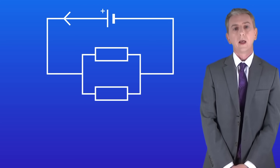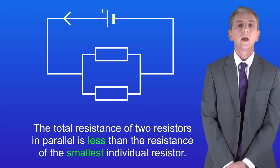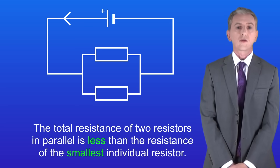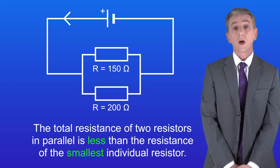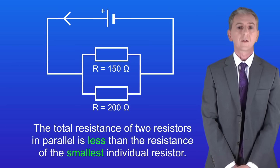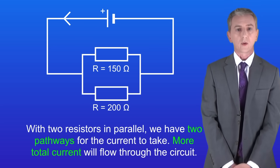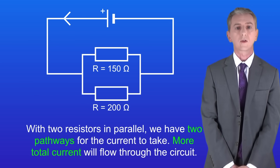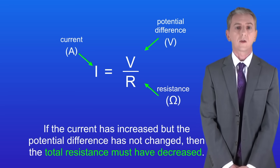We're going to finish now by looking at resistors in parallel. This is more complicated than resistors in series, but the good news is that you're not expected to calculate the total value for resistors in parallel. The key fact to know is that the total resistance of two resistors in parallel is less than the resistance of the smallest individual resistor. For example, with one resistor of 150 ohms and another of 200 ohms in parallel, the total resistance will be less than 150 ohms. That's because with two resistors in parallel we've got two pathways for the current to take, meaning more total current flows. Going back to our equation, if the current has increased but the potential difference has not changed, then the total resistance must have decreased.